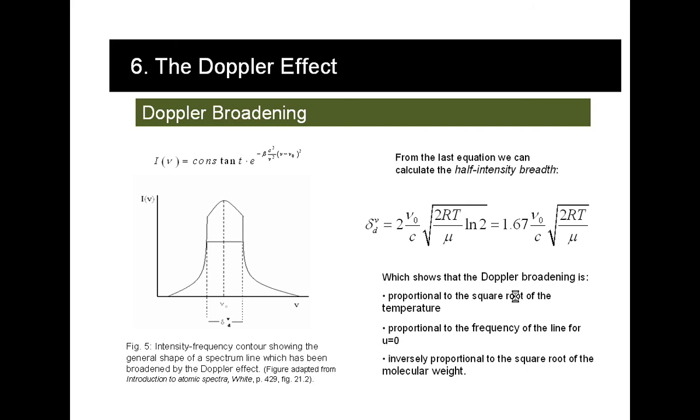From that formula we can see that by increasing the temperature or by increasing the frequency that the line would have if we didn't have any motion, then the broadening gets greater. Whereas if we increase the molecular weight of our material, then the broadening is smaller.